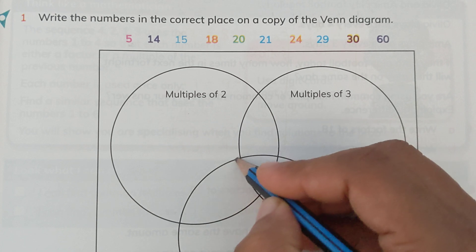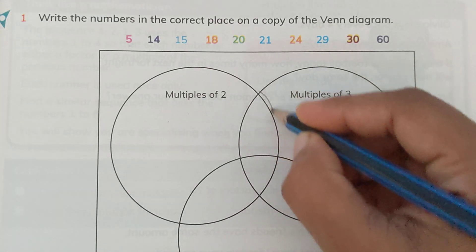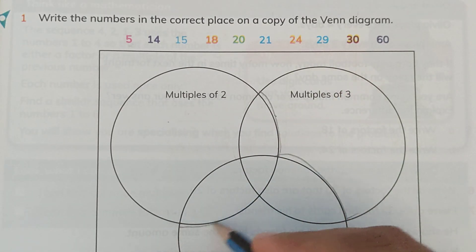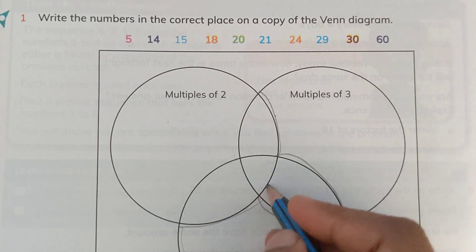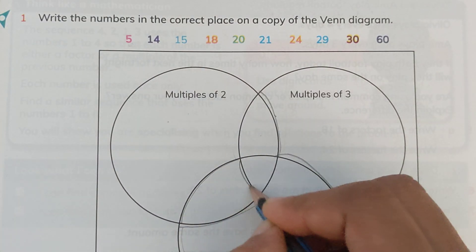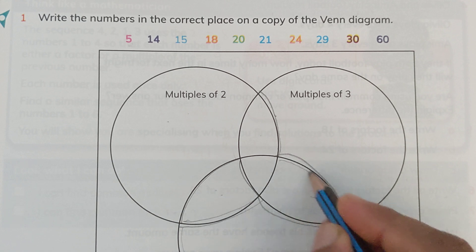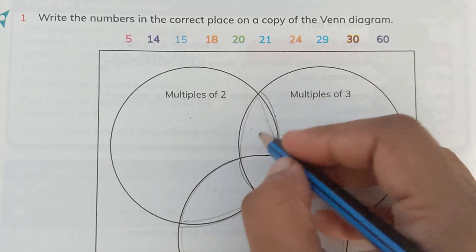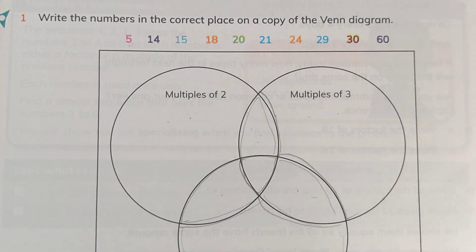This part of the circle only includes the multiples of 2. This part only includes the multiples of 3, and this part includes the multiples of 5 only. The overlapping part between 2 and 5 includes multiples of both 2 and 5. The overlapping part between 3 and 5 includes multiples of both. The overlapping part between 3 and 2 includes multiples of both. The central overlapping part includes multiples of all three numbers. So we have to write down each number in the correct place.